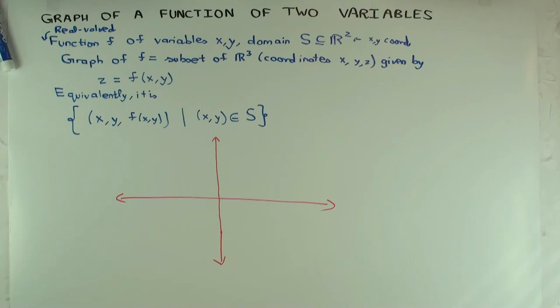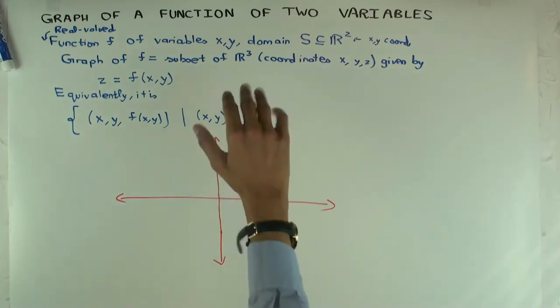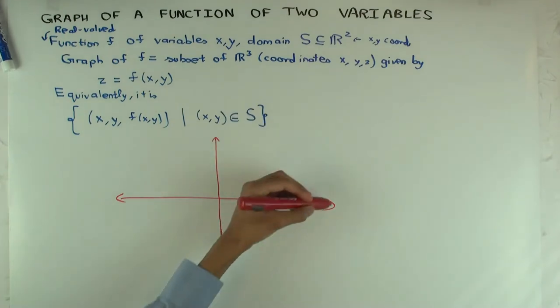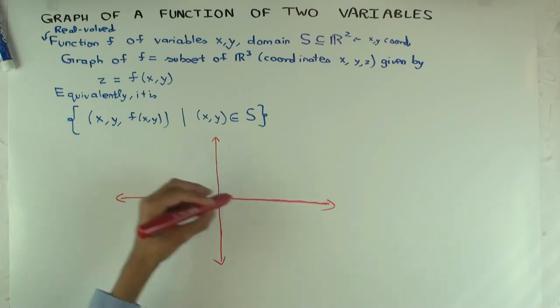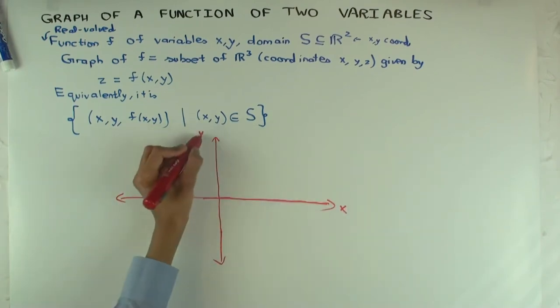So you have how many total variables in the picture? Three. And how do you depict them? Well, you need three axes to depict all of them—that's why the graph is a subset of R³.